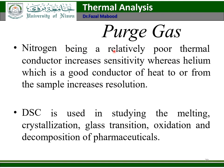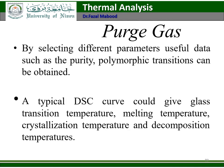Nitrogen, being a relatively poor thermal conductor, increases sensitivity. Helium, which is a good conductor of heat, increases resolution. DSC is used in studying the melting, crystallization, glass transition, oxidation, and decomposition of pharmaceuticals. By selecting different parameters, useful data such as polymorphic transitions can be obtained. A typical DSC curve can give glass transition temperature, melting temperature, crystallization temperature, and decomposition temperature.